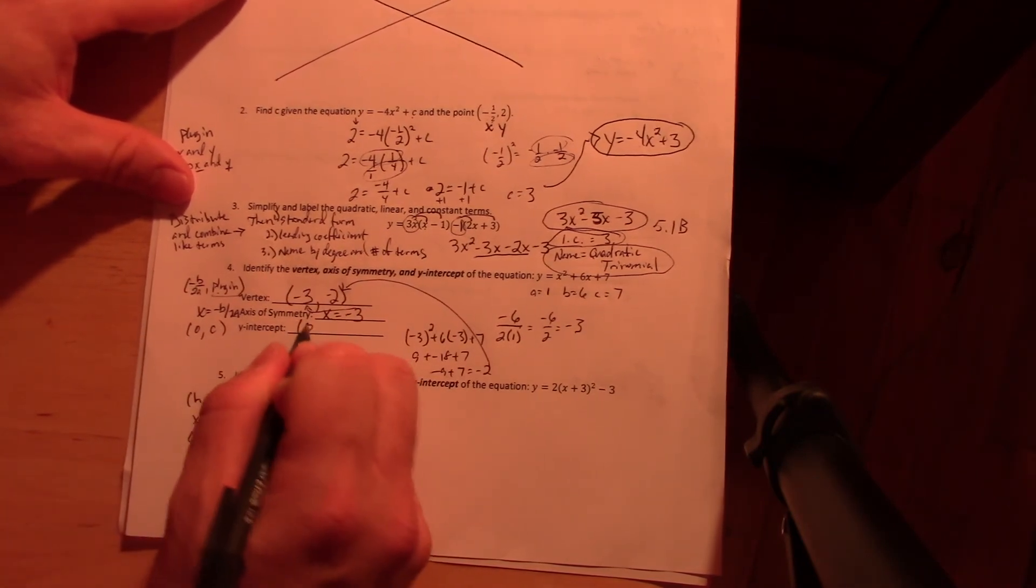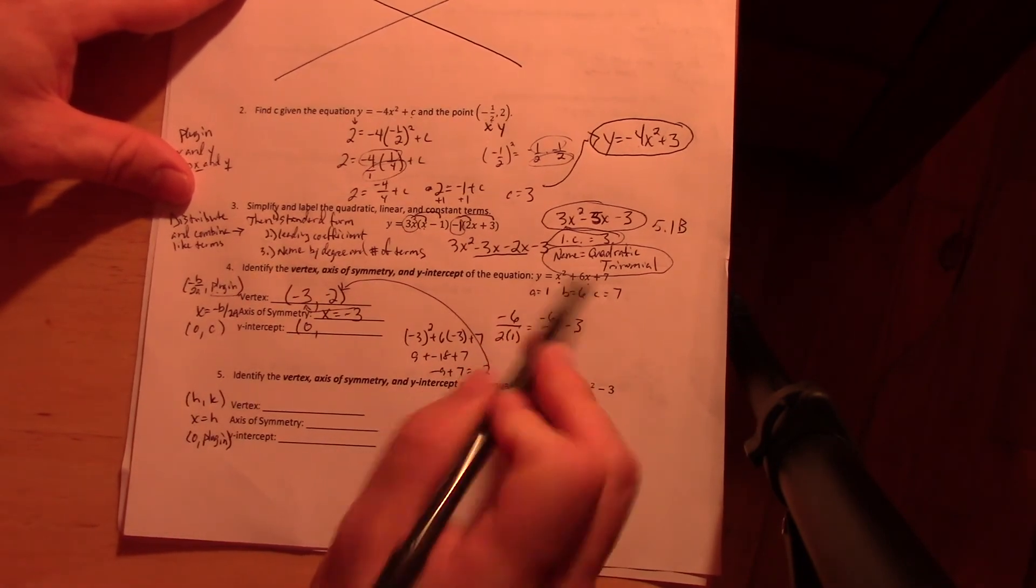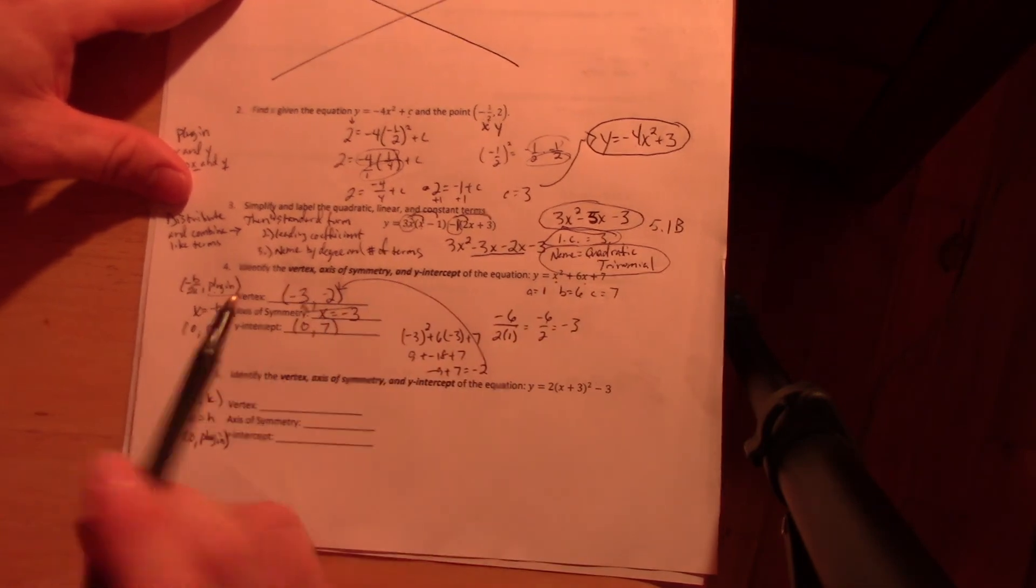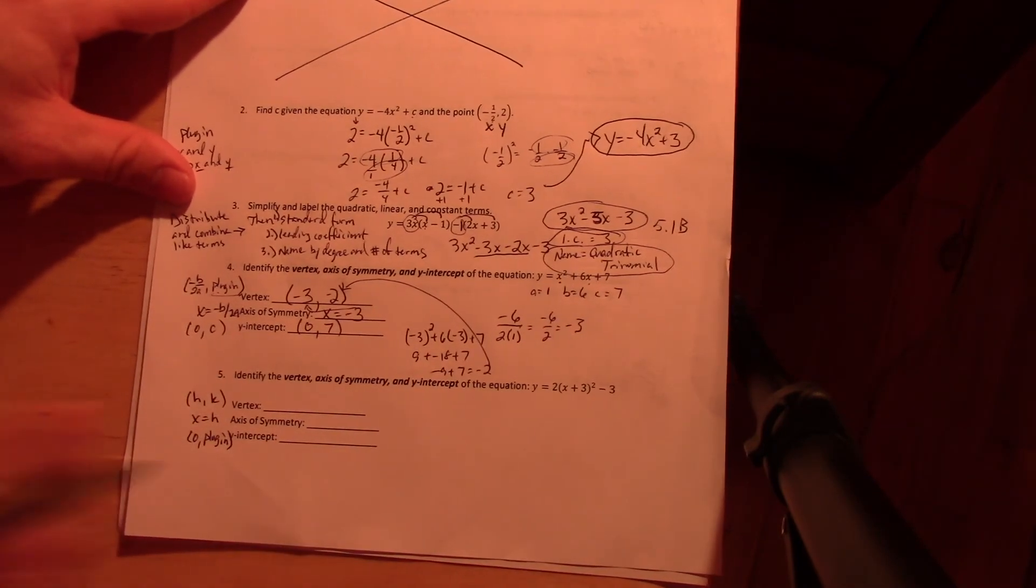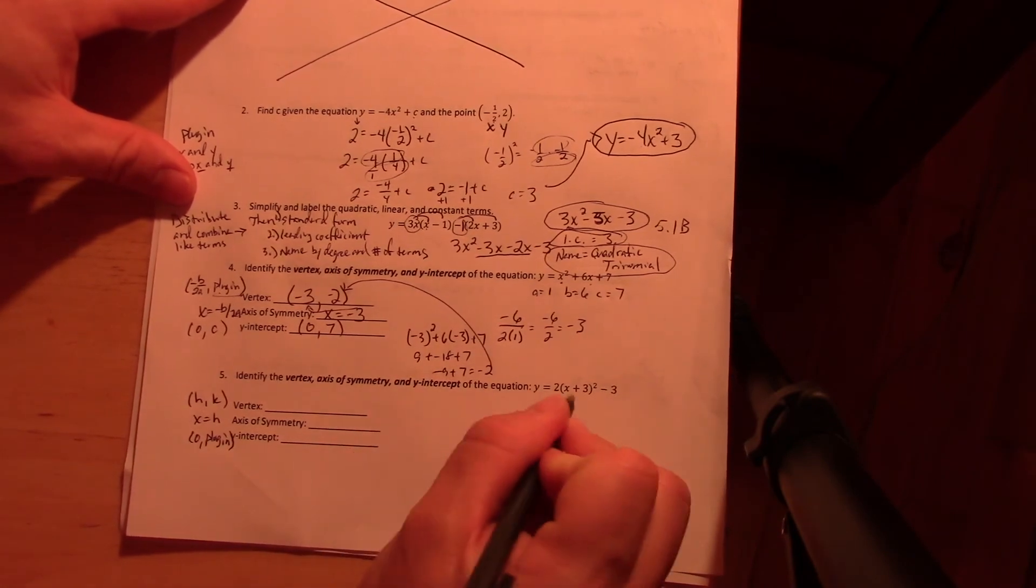For the y-intercept, it really is always zero. Plug zero in. Now if I plug zero in here and here, they go away. You end up with just seven. Now when, if you remember, when it's in standard form, it's always zero C anyway, but it's always in both cases zero: plug it in.